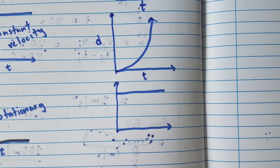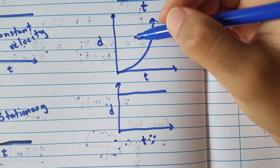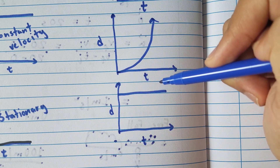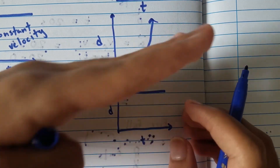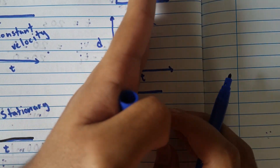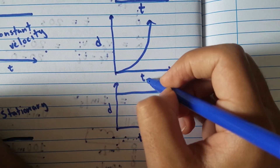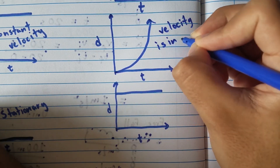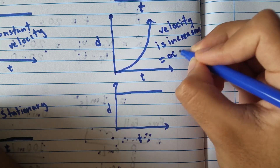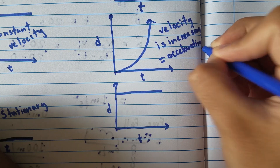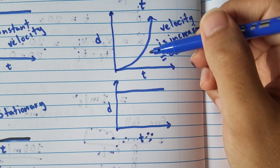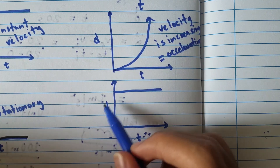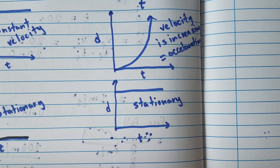Now let's look at two final distance-time graphs. The first is a curve, not a straight line, meaning there isn't a constant change in distance for every constant change in time. The gradient starts close to flat and becomes closer to vertical, so the distance over time is increasing — the velocity is increasing, which means the object is accelerating. The second graph is a straight horizontal line: for every change in time there is no change in distance, so this is a stationary object — it's not moving at all.